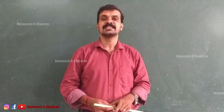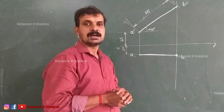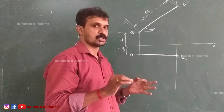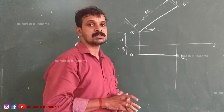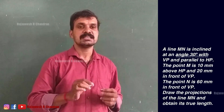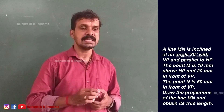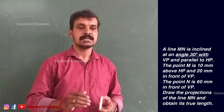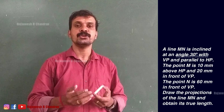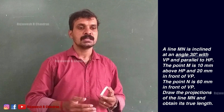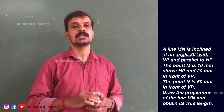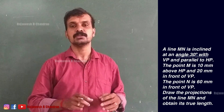Hello friends, I am Rejini Sharjandran and now we are going to do another question in the same topic: projection of lines parallel to one of the reference planes. A line MN is inclined at an angle of 30 degrees with VP and parallel with HP. The point M is 10mm above the reference plane and 20mm in front of VP. The point N is 60mm in front of VP. Draw the projections of the line MN and obtain the true length.